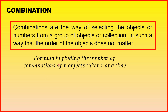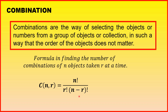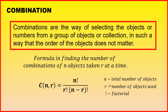At ito yung formula na gagamitin natin in finding the number of combinations of n objects taken r at a time. So, C(n, r) is equal to n factorial over r factorial times the quantity of n minus r factorial. Where n is the total number of objects, r is the number of objects used, and the exclamation point means factorial.